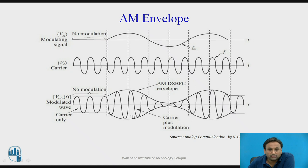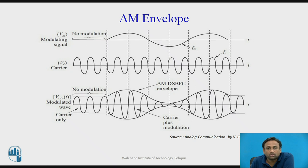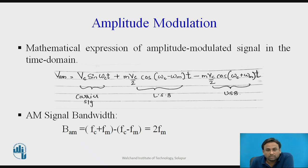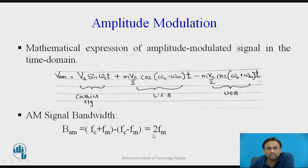This is Vmax and this is Vmin. The modulation index always lies between 0 and 1. If it is more than 1, it is known as over-modulation; if it is less than 1, it is known as under-modulation. The bandwidth required to transmit an AM signal is USB minus LSB, which equals (Fc + Fm) − (Fc − Fm) = 2·Fm. So you require 2·Fm bandwidth to transmit an AM signal.